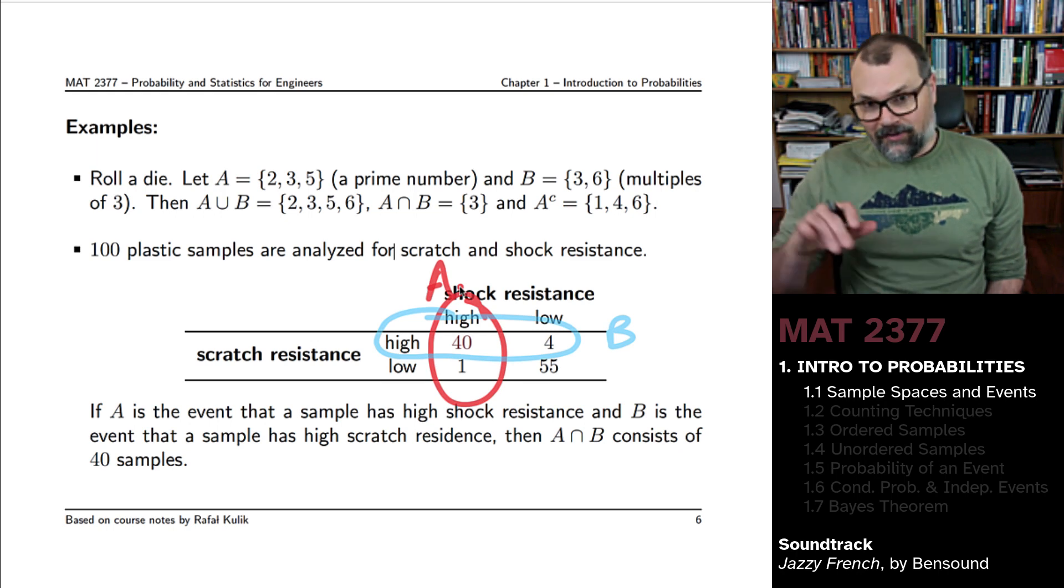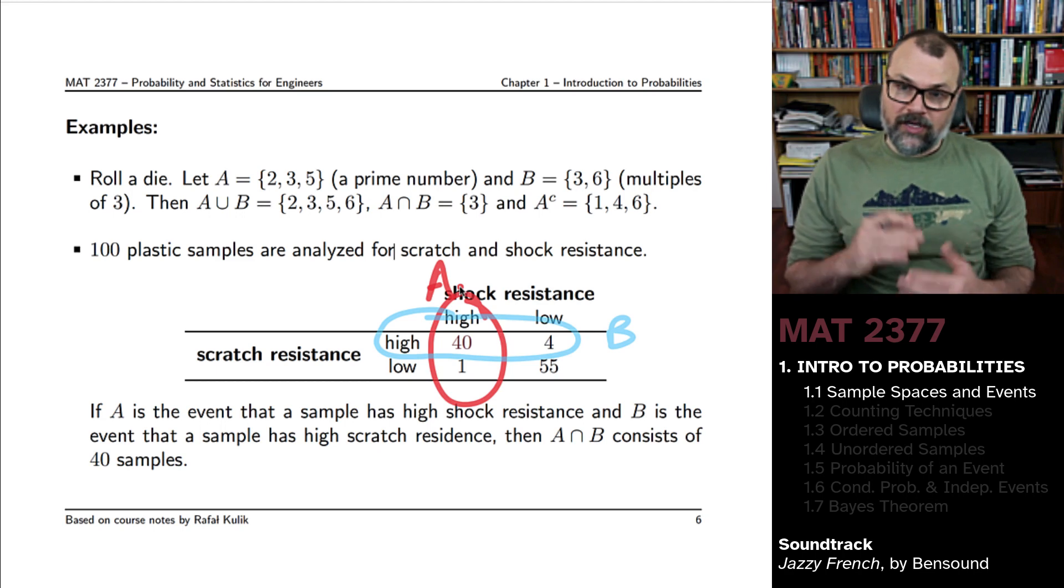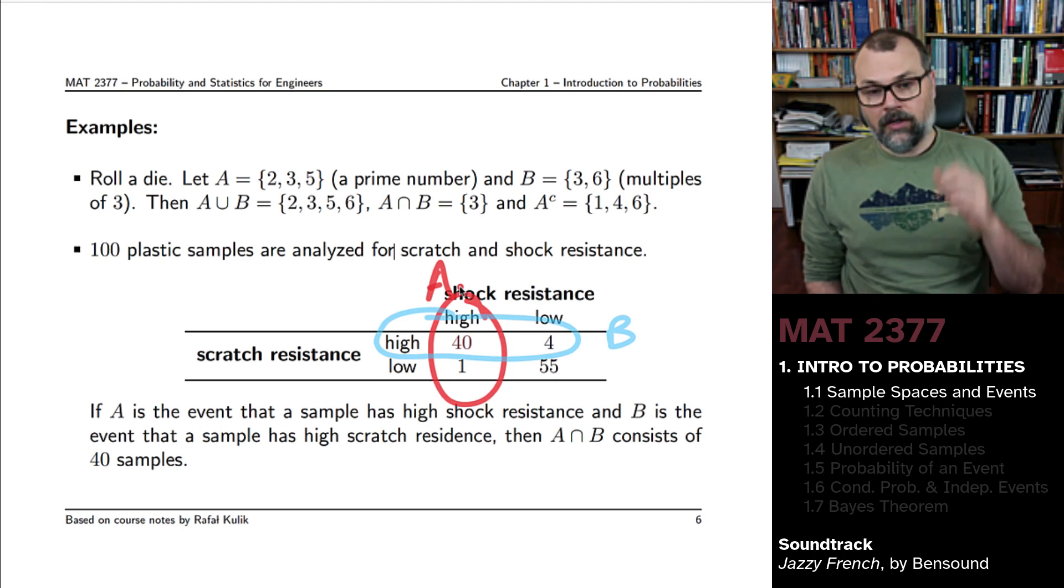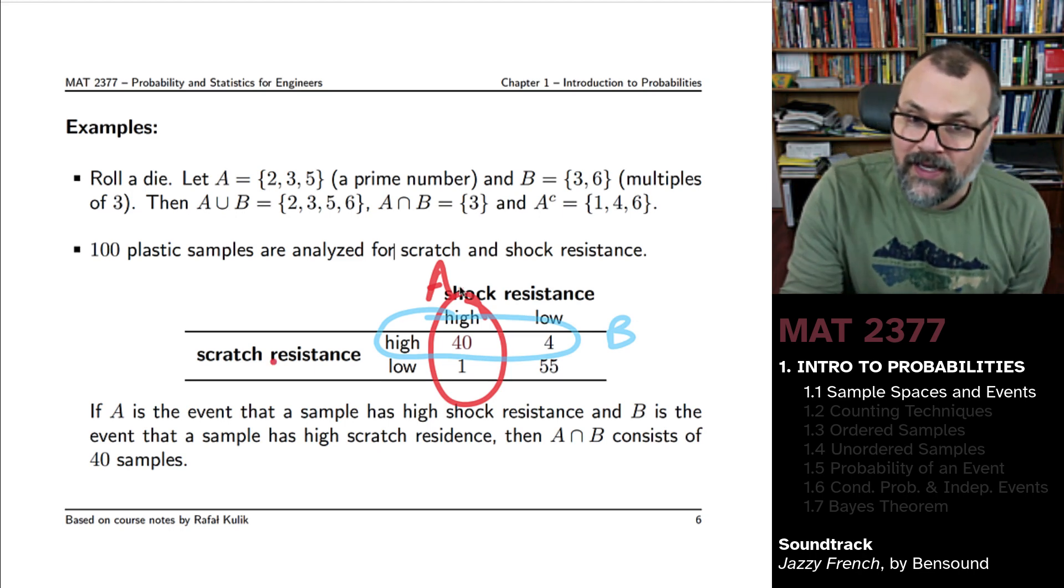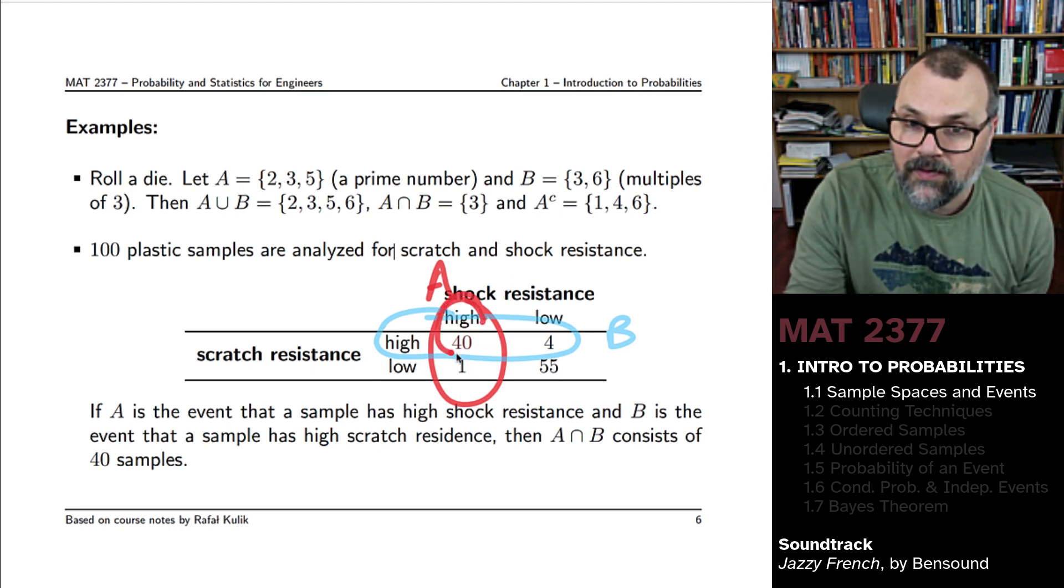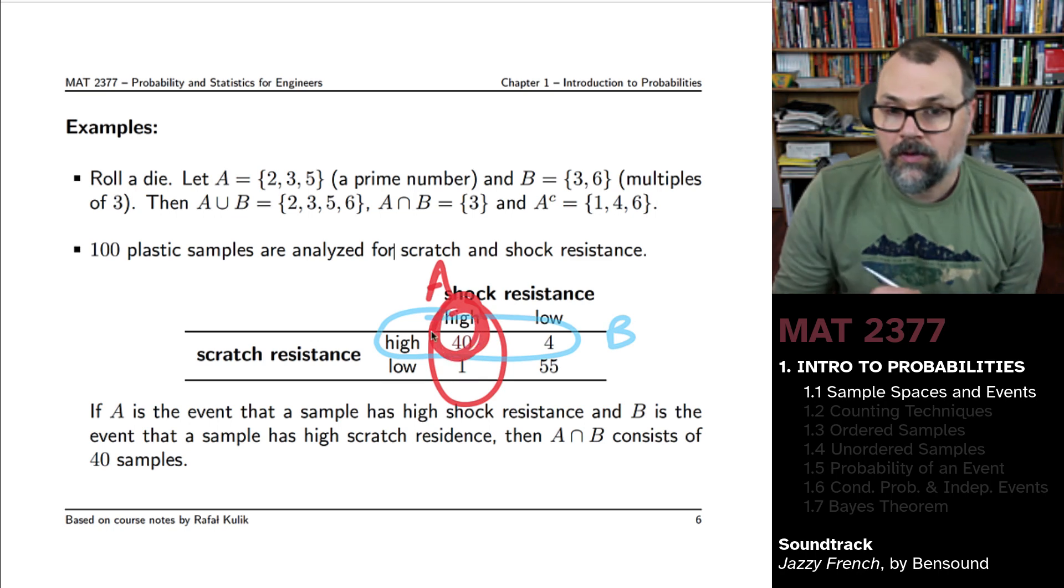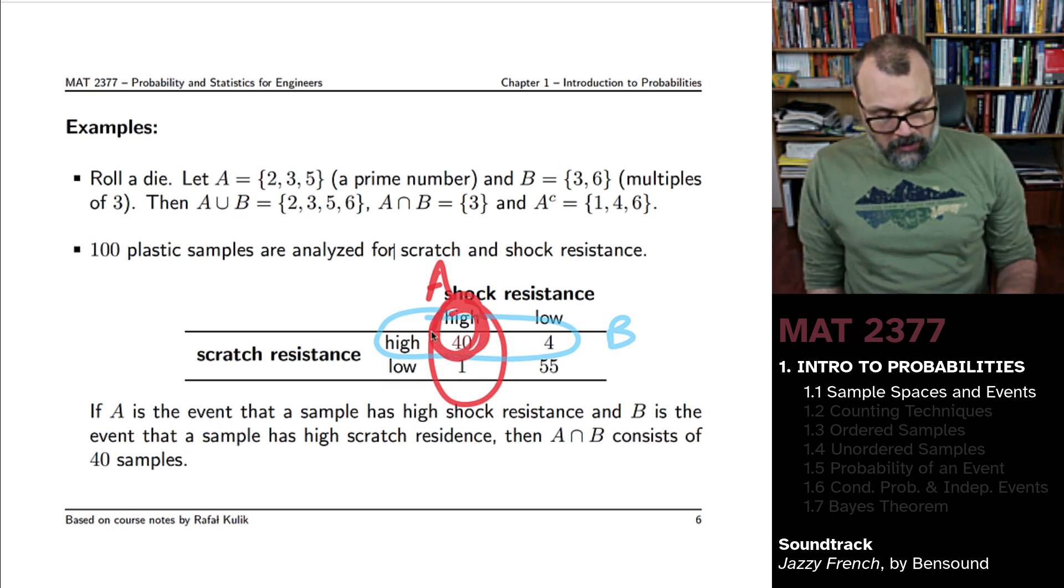40 of them were both highly resistant to shock and scratch. And then I had these five other objects, which were a combination of high and low, depending on what thing you were testing for. And the intersection of events A and B contains only 40 observations.